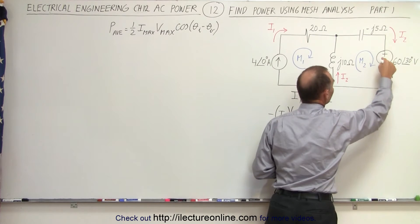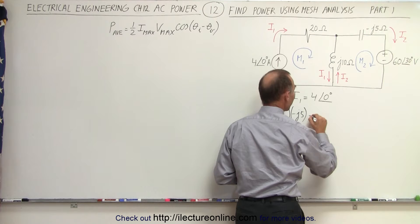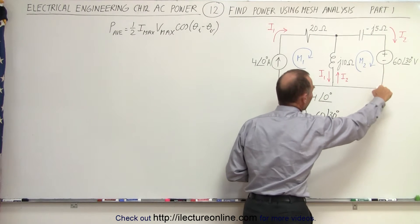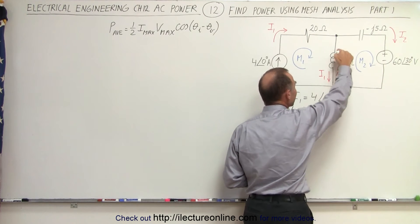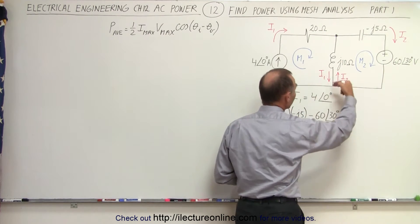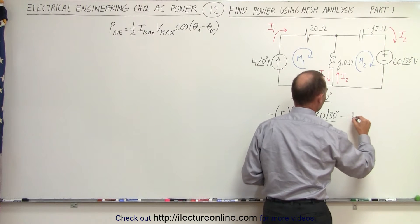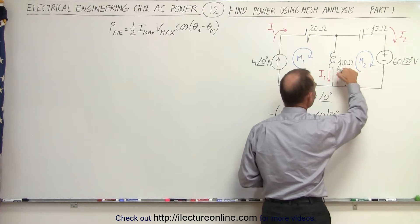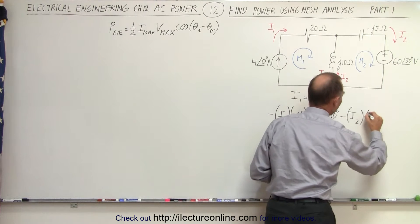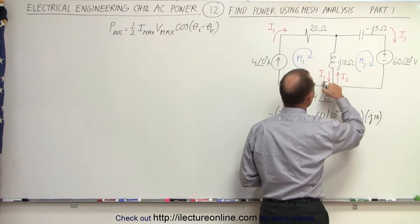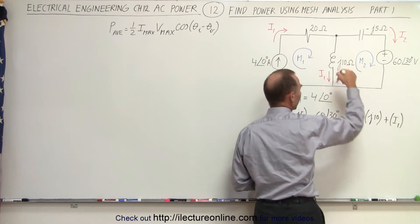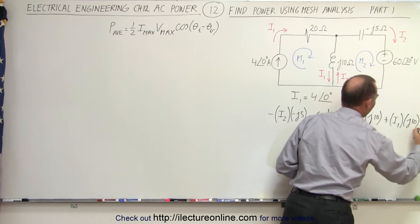Then we go across the voltage supply from the positive to negative terminal — that means it's a voltage drop — minus 60 at a phase angle of 30 degrees. Then we come around to the inductor: there's a voltage drop relative to I2 and a voltage rise relative to I1. So the voltage drop is minus I2 times the reactance J10, and then the voltage rise is plus I1 times J10, and that all equals zero.